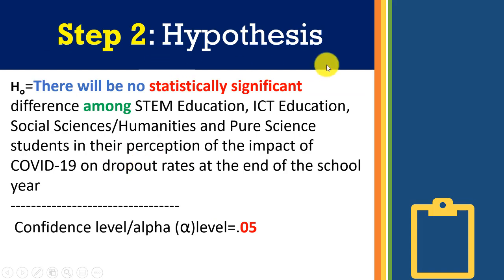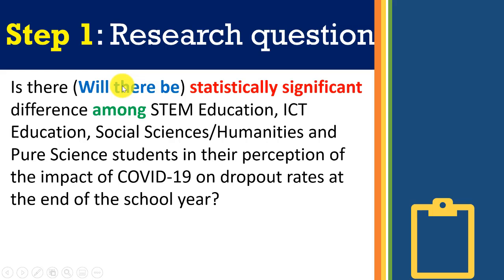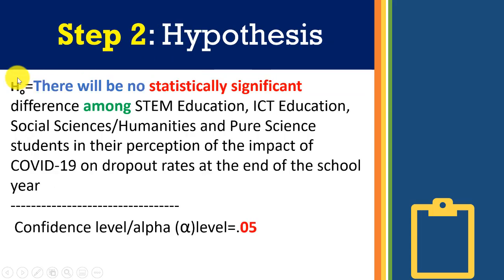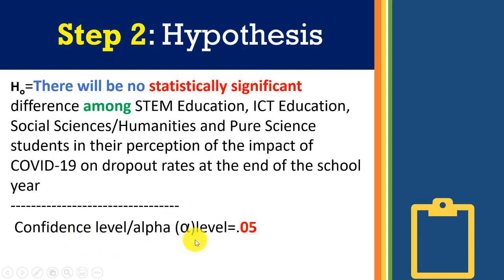Step two is the hypothesis. In the null hypothesis (H₀) you change the question to a statement: 'There will be no statistically significant difference among STEM education, ICT education, Social Sciences/Humanities, and Pure Science students in their perception of the impact of COVID-19 on dropout rates at the end of the school year.' We are confident this will hold at the 0.05 alpha level — that is, 95% confident there will not be any significant difference.